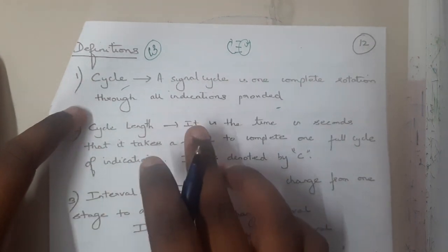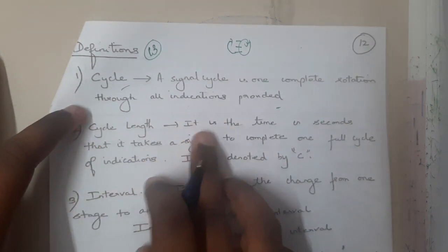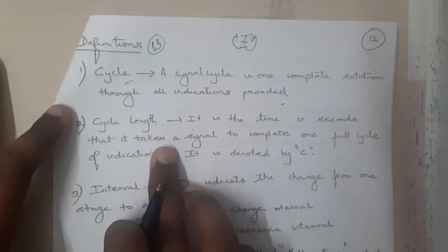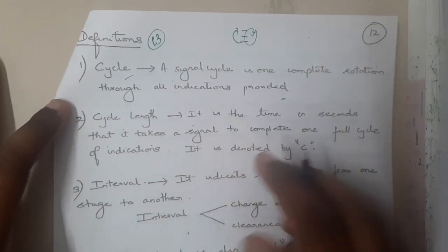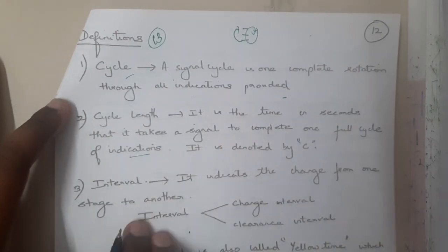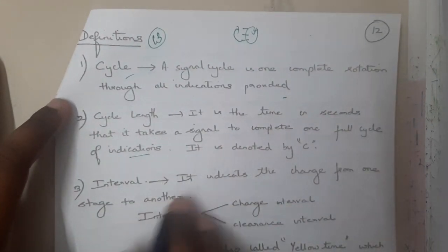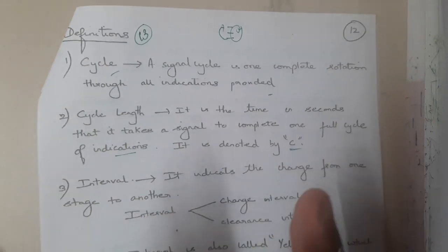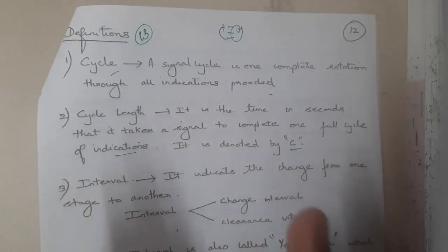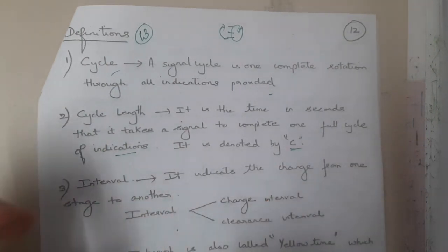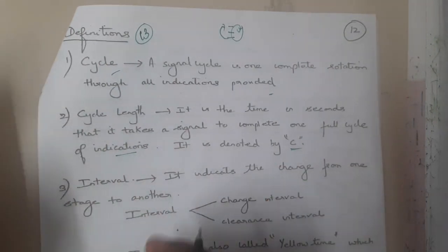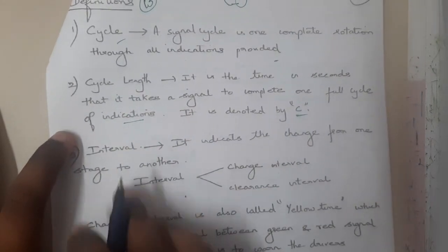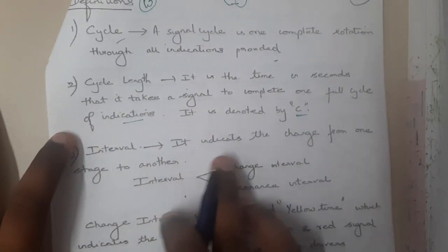Cycle length is the time in seconds that it takes a signal to complete one full cycle of an indicator. It is denoted by 'c'. Please remember the symbols because it's really important — we will be taking one or two problems in the next lectures.